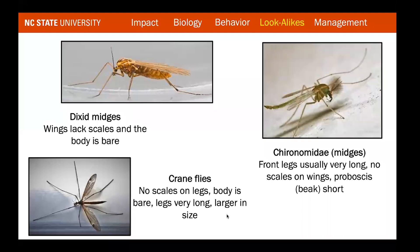Before moving into management, it's worth talking about a few mosquito lookalikes. Dixid midges have no scales on the wings and a bare body. Biting midges have very long front legs, no scales on the wings, and a very short proboscis. Crane flies are often mistaken for mosquitoes — even called male mosquitoes by some — but they have no scales on the legs, a bare body, very long legs, and are much larger than the mosquitoes you'll encounter treating most backyards.